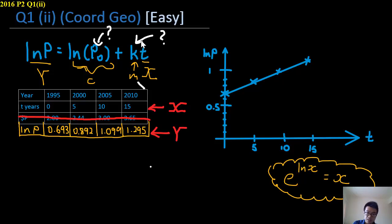So k in this case is easy since it's a gradient. All you have to do is find two points over here. Let's say you use these two points.